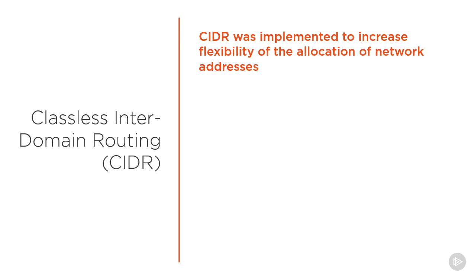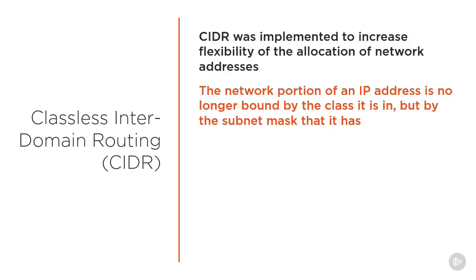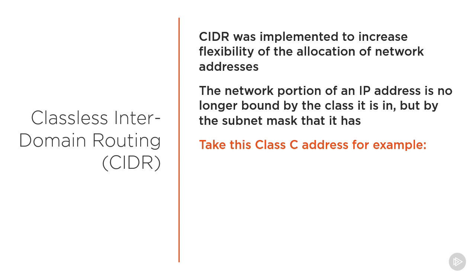A new concept created by CIDR was the subnet mask. The subnet mask effectively removed the classes and grouping of IP addresses, since it would allow for classless grouping of addresses to be created. For example, we'll look at a Class C address, specifically a 192.168.1.1 address.